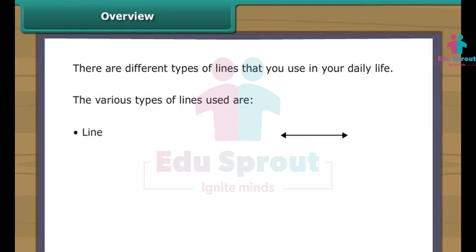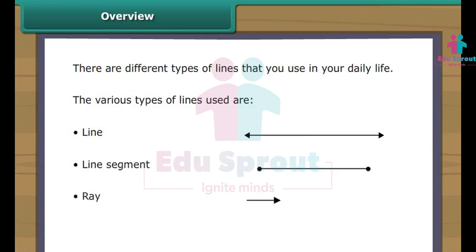A line has no beginning and no end. You can stretch a line infinitely in both directions. A line segment has a beginning and an end. A ray has a starting point but no end. An angle is created with two rays having the same starting point.